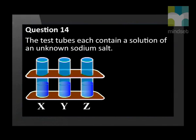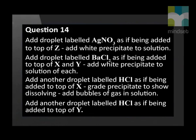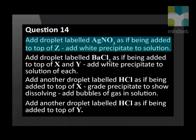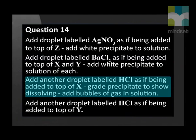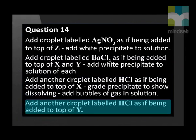The test tubes marked X, Y, and Z each contain a solution of an unknown sodium salt. The following observations are made during a practical investigation to identify the solutions: a white precipitate is formed when silver nitrate is added to test tube Z; a white precipitate is formed in test tubes X and Y after the addition of barium chloride; the precipitate in test tube X dissolves in hydrochloric acid and a gas is released; the precipitate in test tube Y is insoluble in hydrochloric acid.